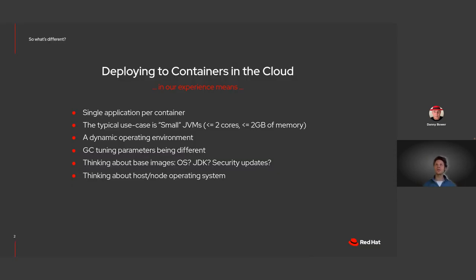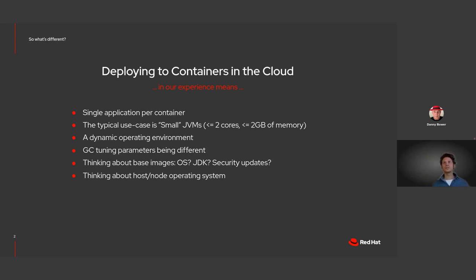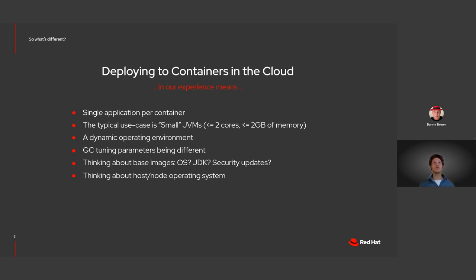So deploying to containers in the cloud — is it actually different? In our experience, it is. When you're deploying to containers in the cloud, the application runs as PID1 and you usually have one application per container. That usually means smaller JVMs overall — less than two cores and less than two gigabytes of memory. The environment is also more dynamic, with resource limits that might change during the deployment lifecycle, and the underlying nodes might differ throughout deployment as well.